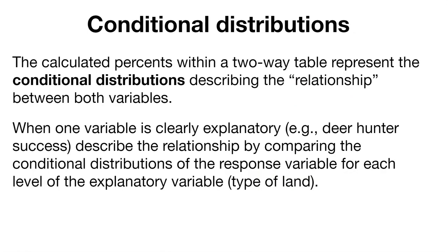When we talk about chi-square distributions, the concept of conditional distributions is important. This describes a relationship between both variables. So when one variable is clearly explanatory, deer hunter's success as an example, that describes a relationship by comparing the conditional distributions of the response variable for each level of the explanatory variable.